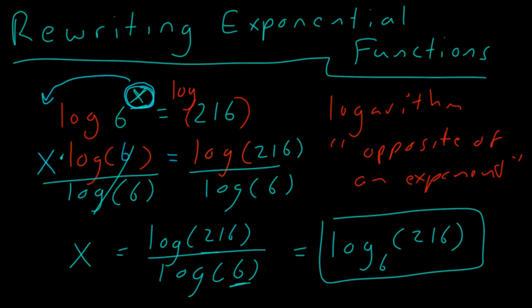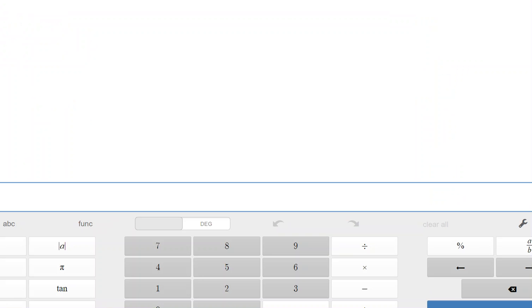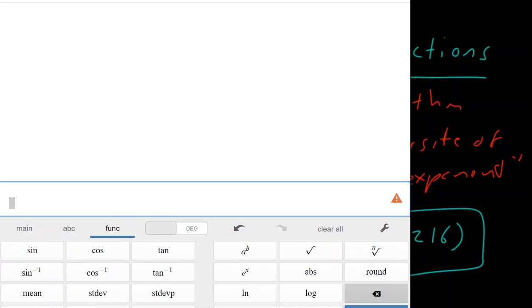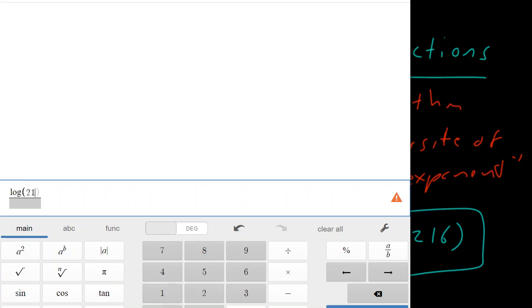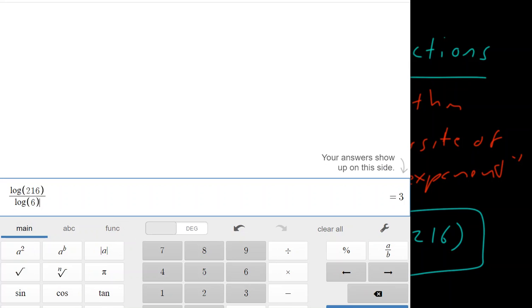So we're actually going to use our Desmos scientific calculator, and we're going to punch it in like this. So how in the world do we do this? Well, what we do is we first want to click A over B, so we have a fraction. And then we're going to go to Function, and you're going to see the word log right over here to the right side. So I push log. I then have to flip back to my main calculator, where I type 216, close my parenthesis. I then go down to the bottom, I click my function again, I go type log, and then I'm back to main, and I put 6, and I close my parenthesis.